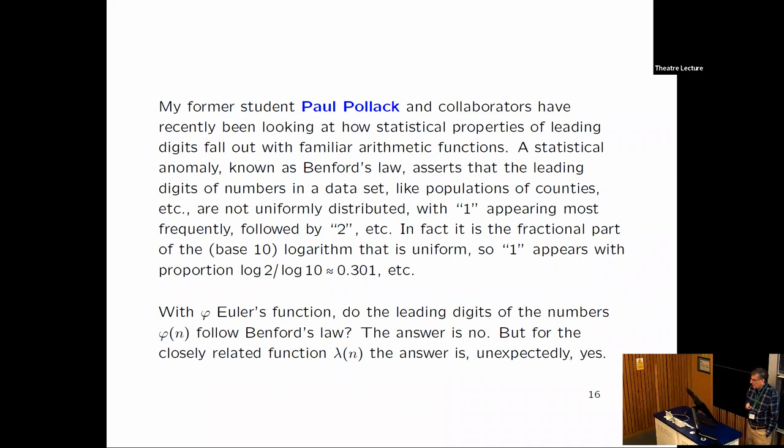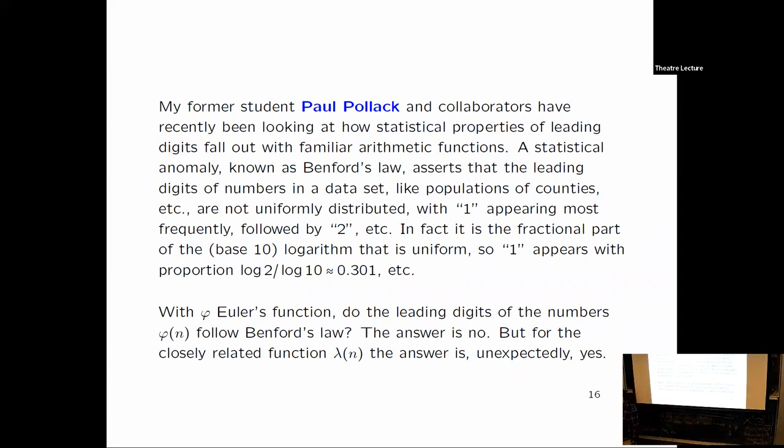My former student Paul Pollack and collaborators have been looking recently at Benford's law. This is a principle from statistics. So if you look at, for example, take a list of all of the towns in Scotland and what their populations are. These are some list of maybe random numbers. But you'll find that the leading digits of these numbers are more likely to be one than any other digit, and two is the next most common and so on. This has to do with, in fact, that the logarithms of these numbers are uniformly distributed. And that sort of explains the predominance of one. It's the base 10 logarithm of two. So that's the proportion of times you see a one.